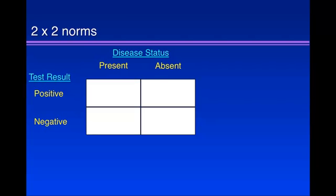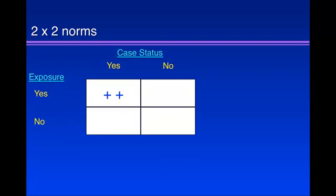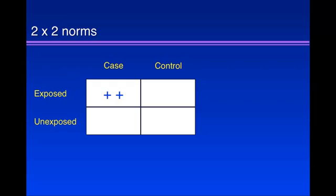This leads me to want to show you some norms for the 2x2 table. When you build it, you want to make the upper left-hand corner always be someone with disease and a positive test result — a positive-positive cell. As a side note, this is also true for a case-control study: you want the upper left-hand cell to be a positive-positive cell where the case is someone who is exposed. If you always do the 2x2 table this way, your life will be a lot easier.